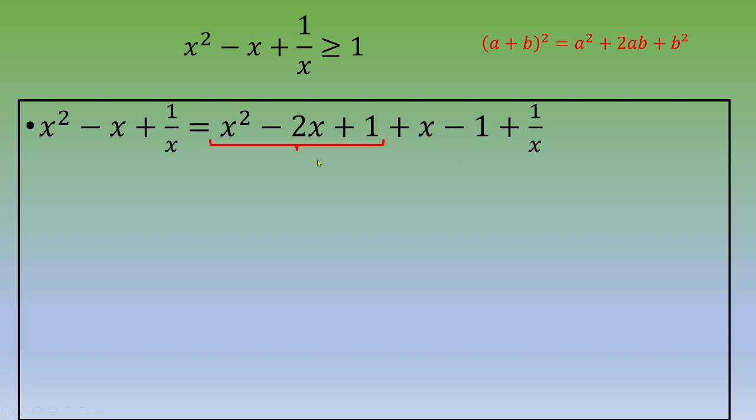So these three terms form the remarkable identity. We end up with x minus 1 squared plus x minus 1 plus 1 over x.